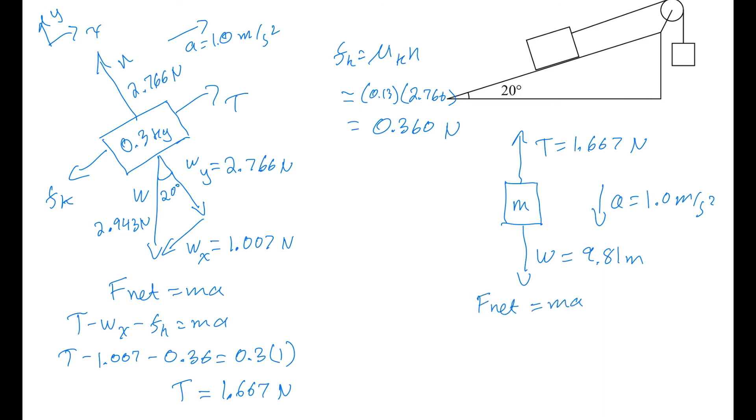F_net is all the forces in the direction of the acceleration, which is W, minus all the forces going against the acceleration, which is T. So F_net is going to be 9.81m minus 1.667. Well, let's just write that in symbols first. It's going to be the W minus the T is going to be equal to ma. 9.81m minus 1.667 equals m times 1.